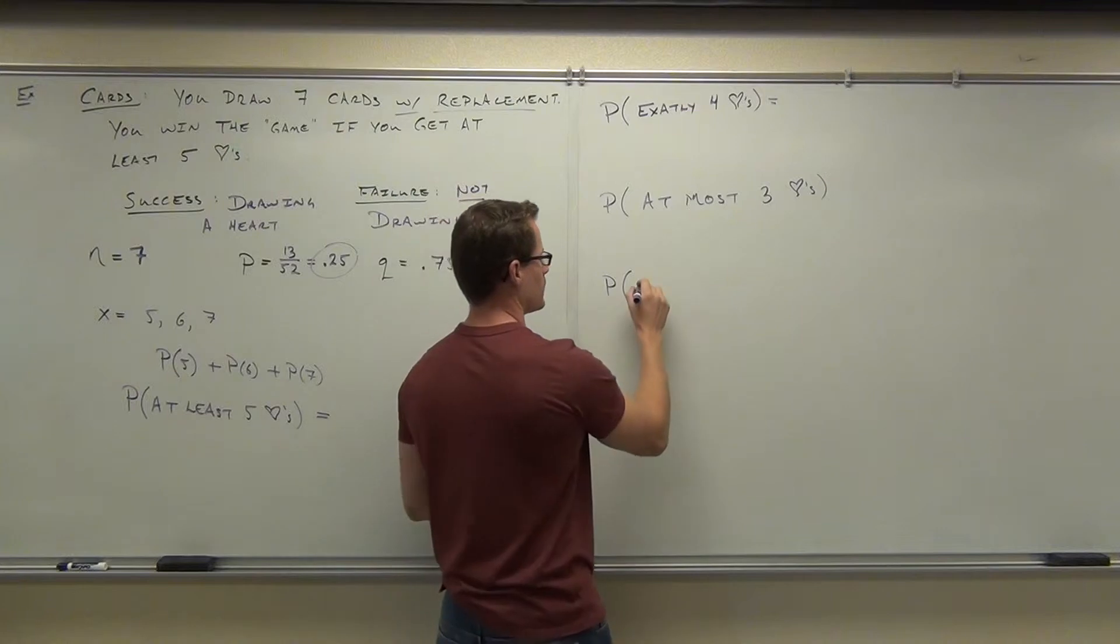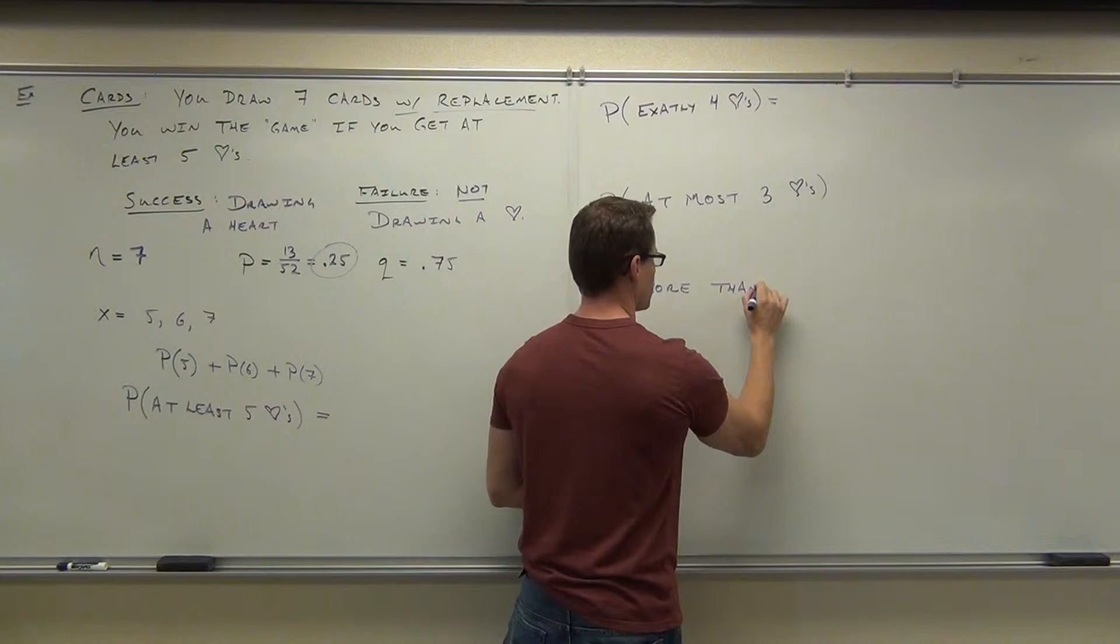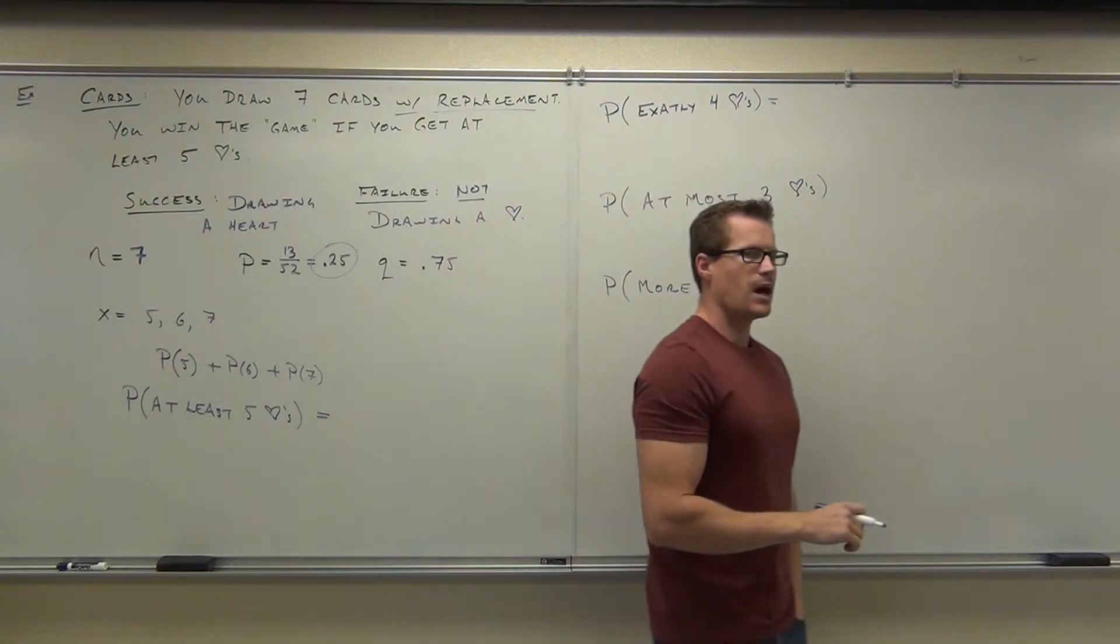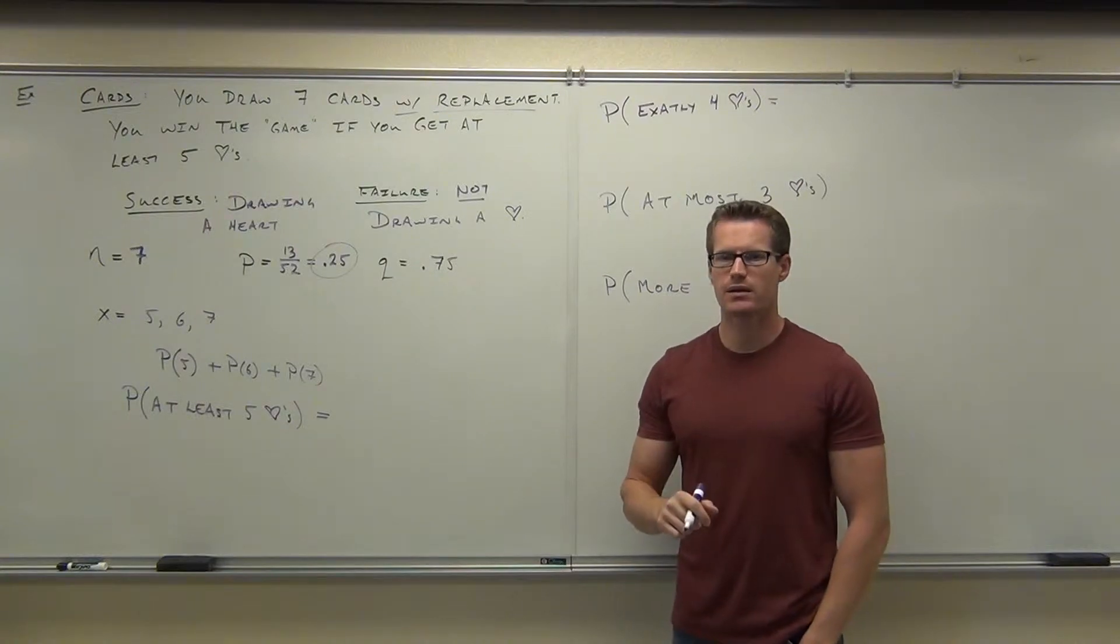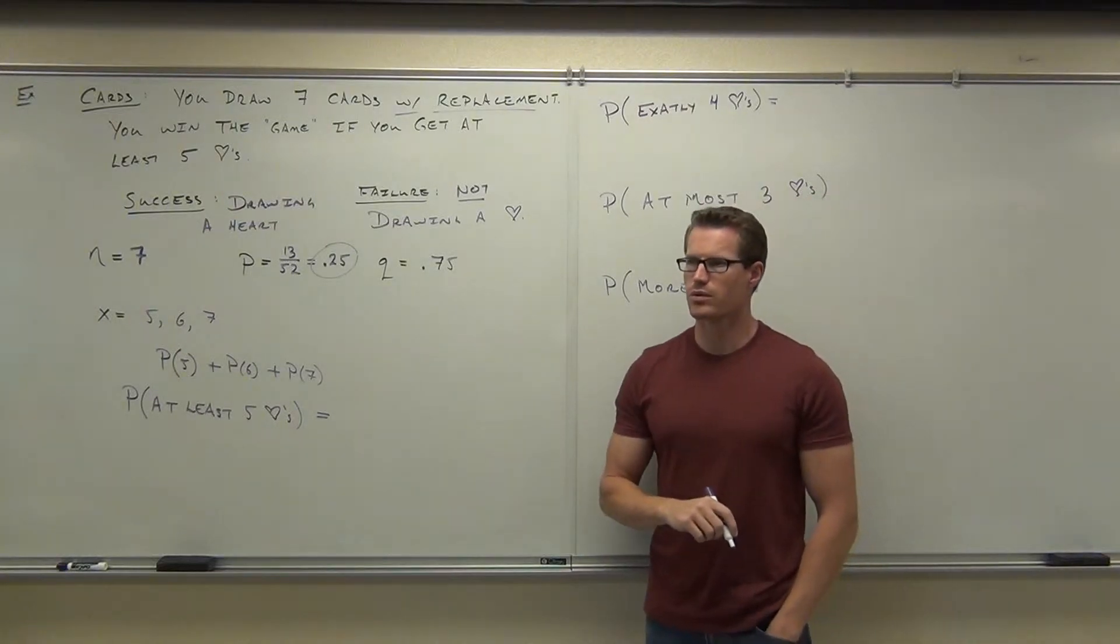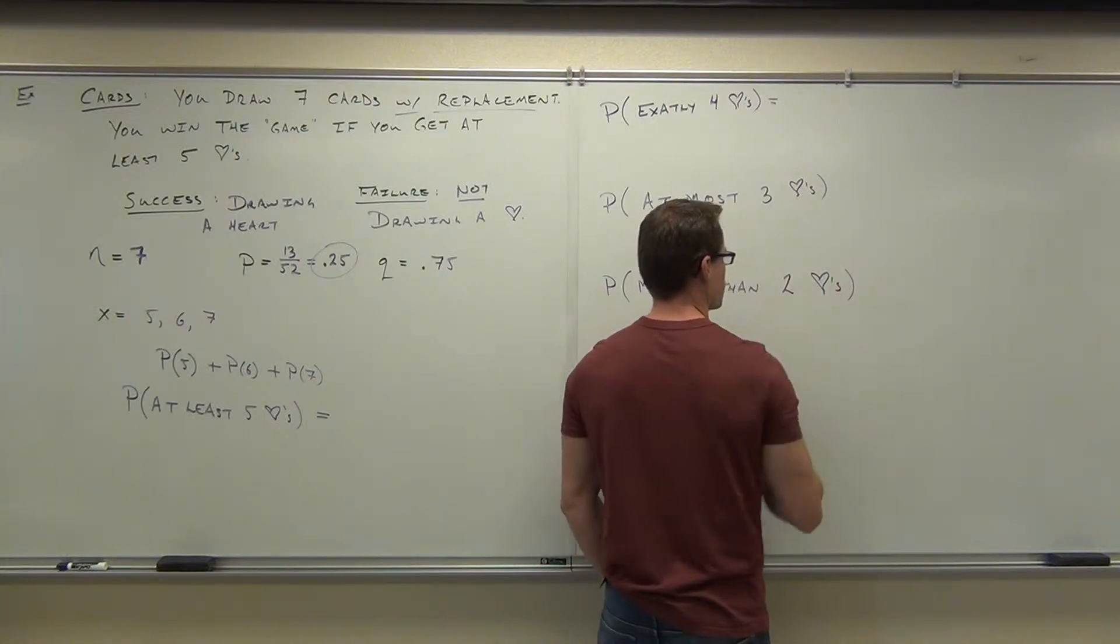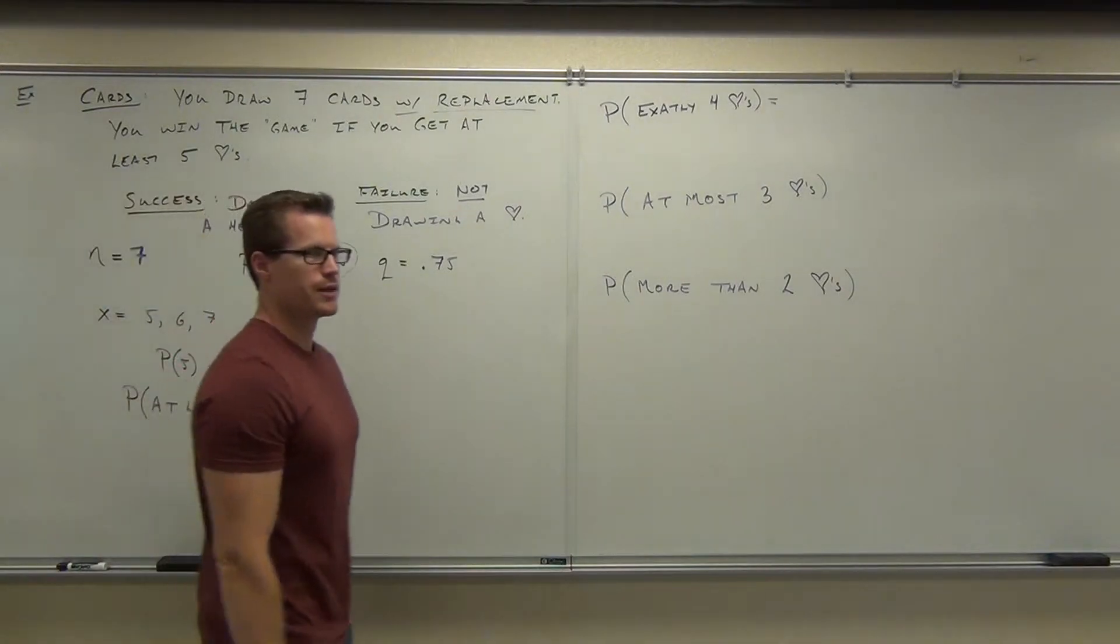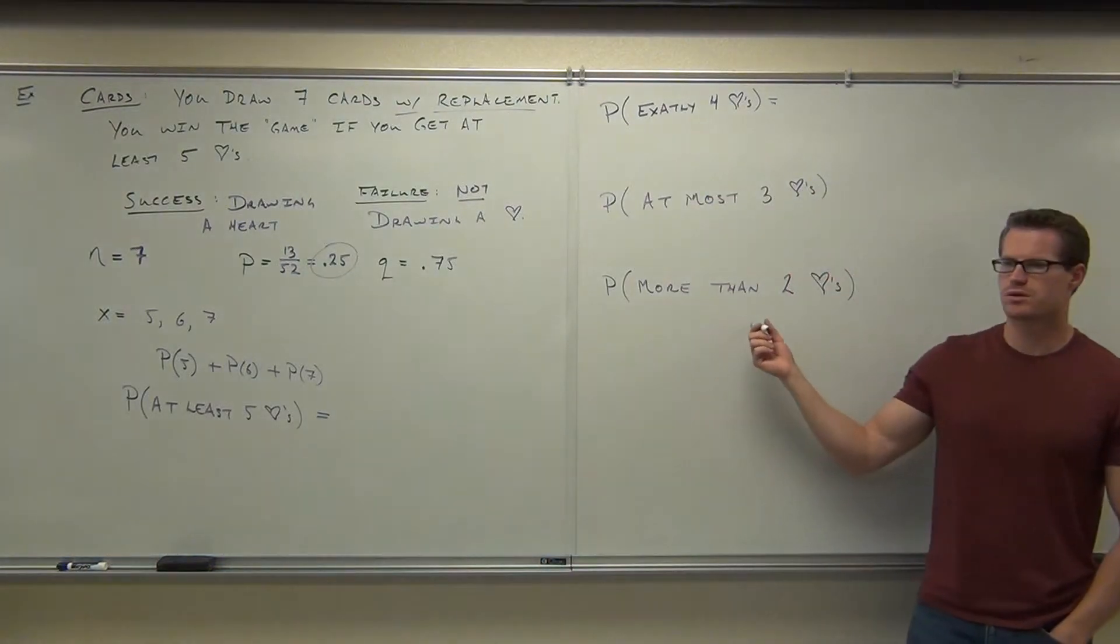Probability of more than. How about this? You have to win the game. In order to win the game, you have to have more than five hearts. Oh, I'm already using five. Let's say you have to have more than two hearts. In order to win the game, you have to have more than two hearts. Give me the scenarios for winning this game. More than two hearts. Give me the scenarios for winning.